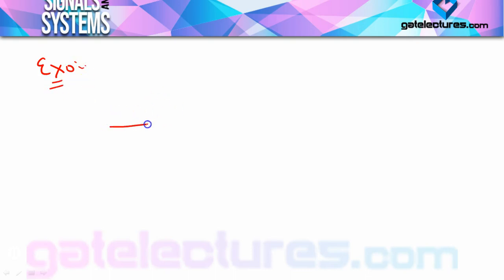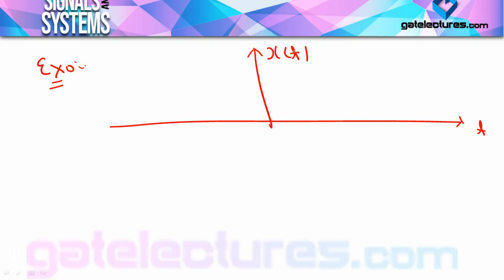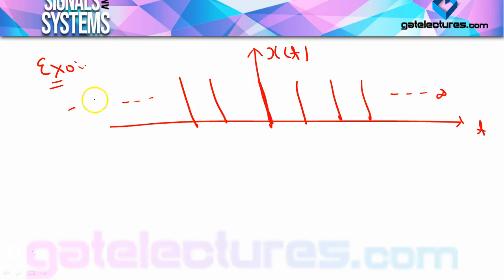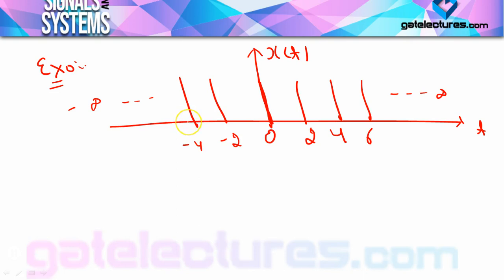The first example is a periodic signal x(t), which is an impulse train. This signal has impulses at 0, 2, 4, 6, −2, −4, −6, and so on up to minus infinity to plus infinity. All amplitudes are 1. We need to calculate the exponential Fourier series coefficient for this x(t). Once we have the exponential Fourier series coefficient cn, we can calculate all other coefficients and write the Fourier series.